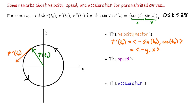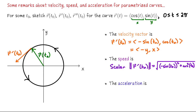Speed is the magnitude of velocity — a scalar value obtained by computing the length of r prime at t-naught. That's the square root of negative sine squared plus cosine squared, which gives a speed of 1. This is true for any input along this curve, so this is a unit speed parametrization: for any input, the velocity vector has length 1.